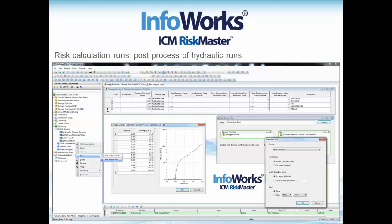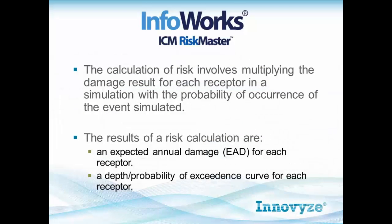The actual calculations simply involve multiplying the damage result for each receptor with the probability of occurrence for the simulated event. The results of a risk calculation are essentially an expected annual damage value, or EAD value, reported for each property, and also a depth and probability of exceedance curve for each receptor.